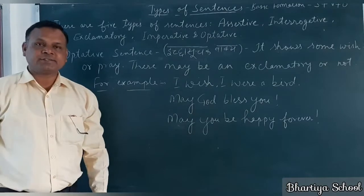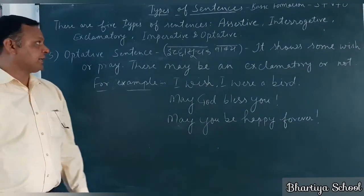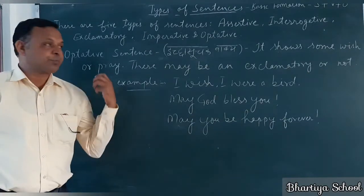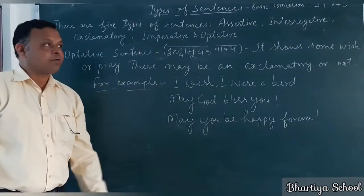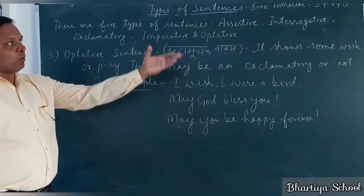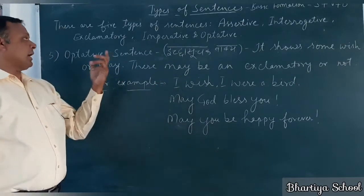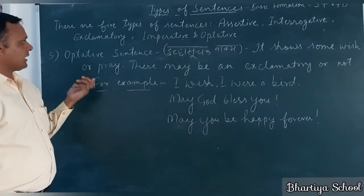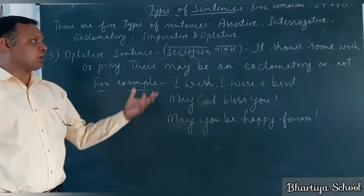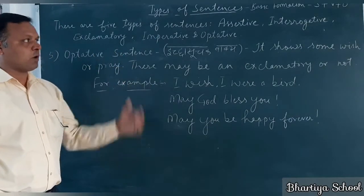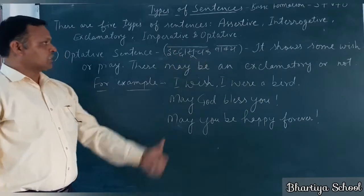We are at the last type of sentence, that is the optative sentence. In Hindi we have a specific name for it. We have just done four types of sentences, and now we are at this last type. The optative sentence — its definition is that it shows some wish or prayer.